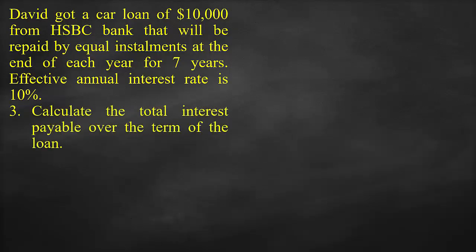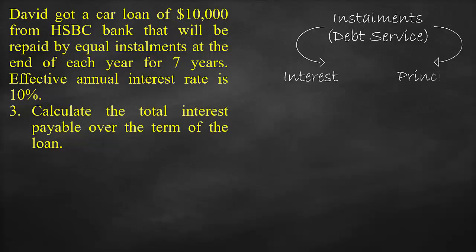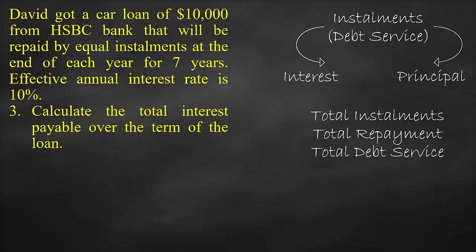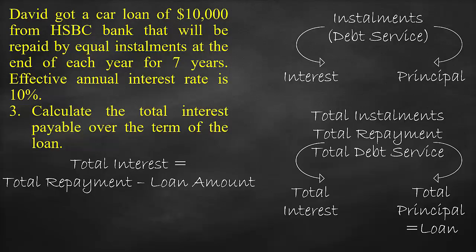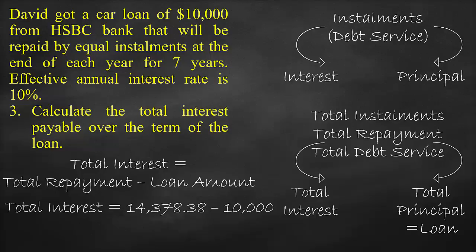The next part is to calculate the total interest payable over the term of the loan. When we take a loan, the periodic instalment — also called debt service — is composed of the interest payment and part of the loan called the principal. The total repayments include total interest payment and total principal repayment. The total principal repayment equals the loan amount itself. Therefore, the total interest payment equals total repayments minus the loan amount: $14,378.38 minus $10,000 equals $4,378.38.